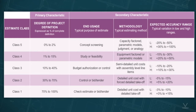Historically, estimates created by architects or engineers are usually low compared to the market because they've either excluded something in the means or methods that were identified by the contractor — for example, job office overhead types of items. This cost estimate classification matrix helps to explain why one might estimate a project on the low end based on knowledge of the project itself.